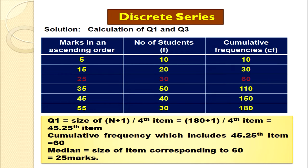We compute Q1 as the size of (n+1)/4th item. Here n = 180, so (180+1)/4 = 45.25th item. We look this up in the cumulative frequency column — it falls in the row with CF = 60, as highlighted. The corresponding marks value is 25. So Q1 = 25 marks. This is how we compute Q1 in case of discrete series.